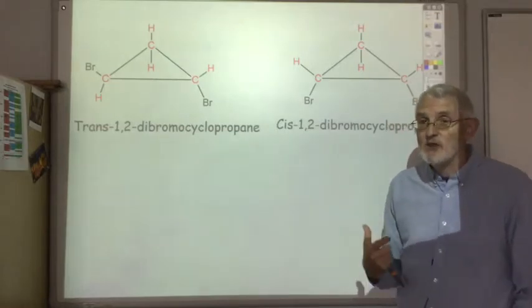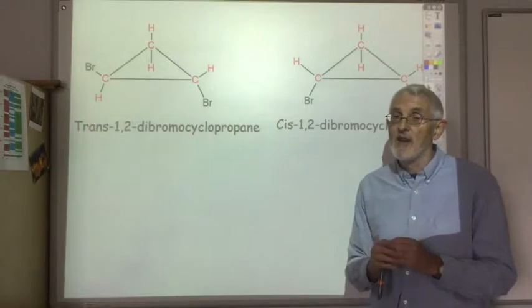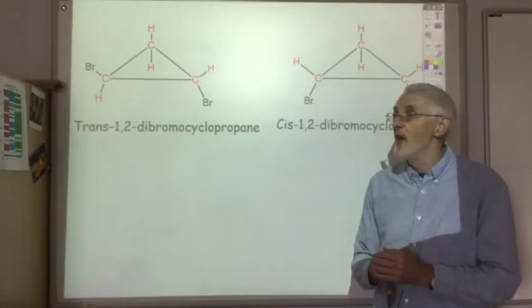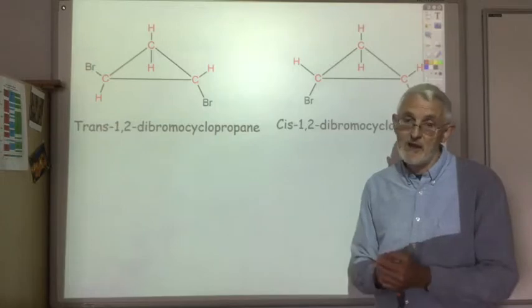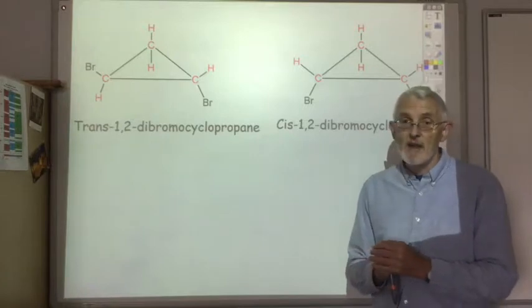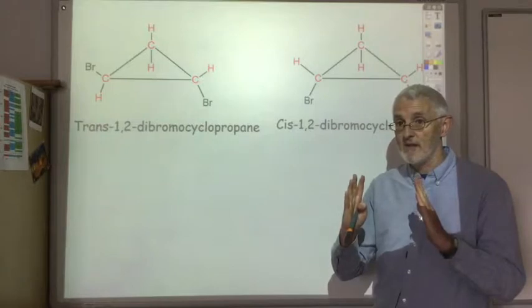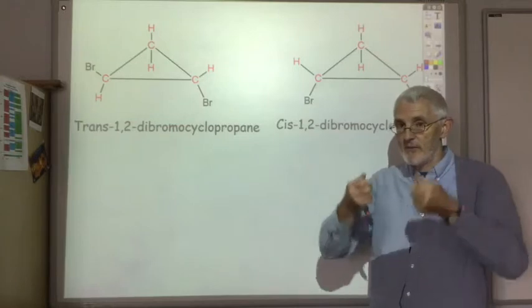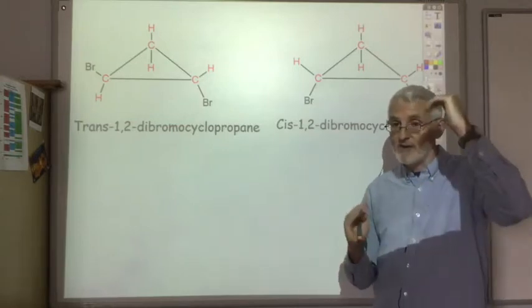So there are the two situations where you're going to get geometric isomers. If you've got a carbon-carbon double bond and both carbons have had the hydrogen removed and something else put on instead. Or a ring. The ring could be three, four, five, six, seven, eight carbons in size. It doesn't really matter. And again, you either have two substituents on the same side of the ring or they're on opposite sides of the ring.